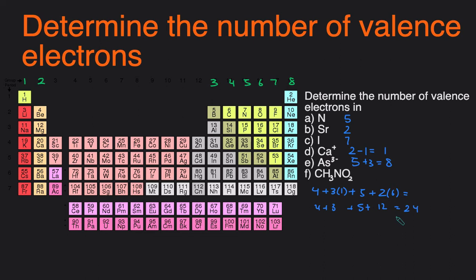And that's how you determine the number of valence electrons of an element, a compound, and an ion.